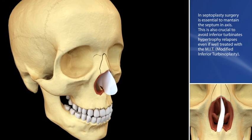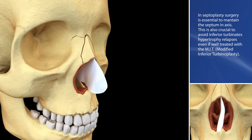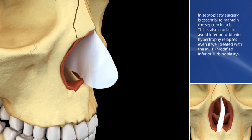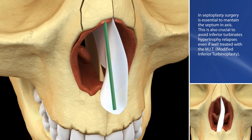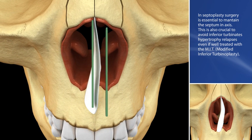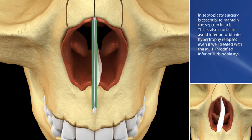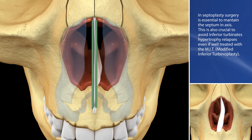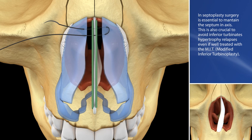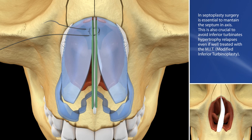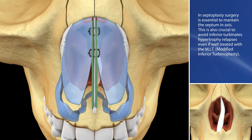To prevent cartilage nasal septum memory, we stabilize the septum on the midline using the 3GK stitch, that we are going to describe, and jacksheen spreader grafts when necessary, associated with vertical batten grafts. An accurate graft suture permits a safe stabilization with no secondary memory recurrence.